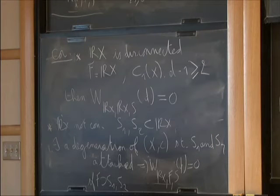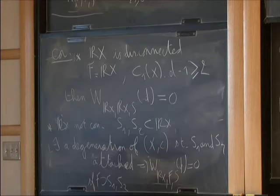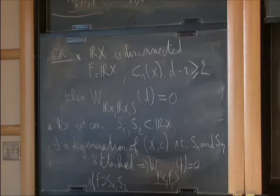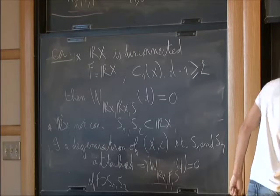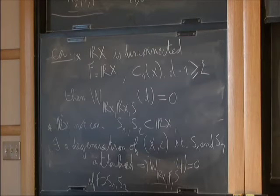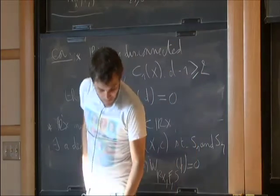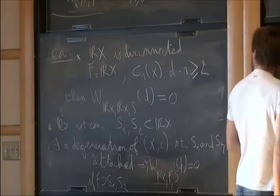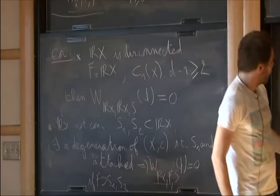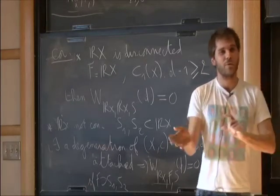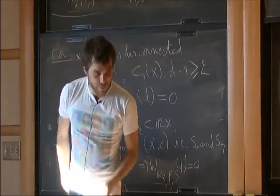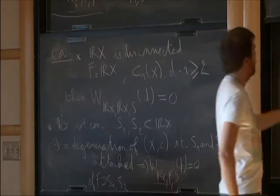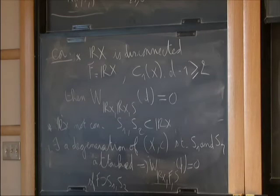Computations are not so easy to do. So this states that yeah, the Welschinger invariants may be a tool in the study of moduli space of real rational algebraic surfaces. A third thing: can we compare the Welschinger invariants and the Euler characteristic of the real part?